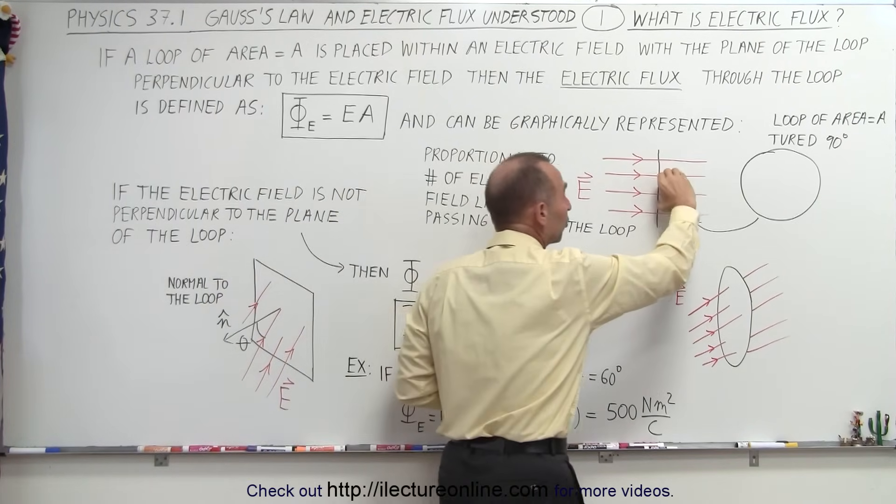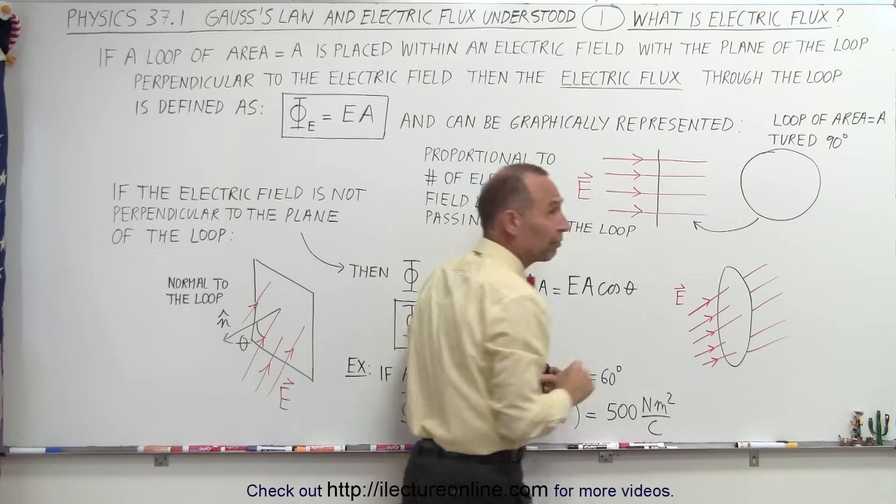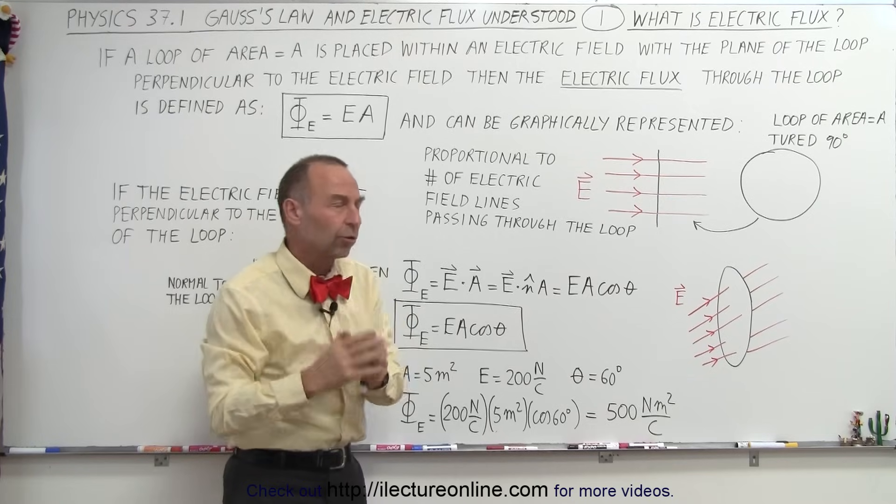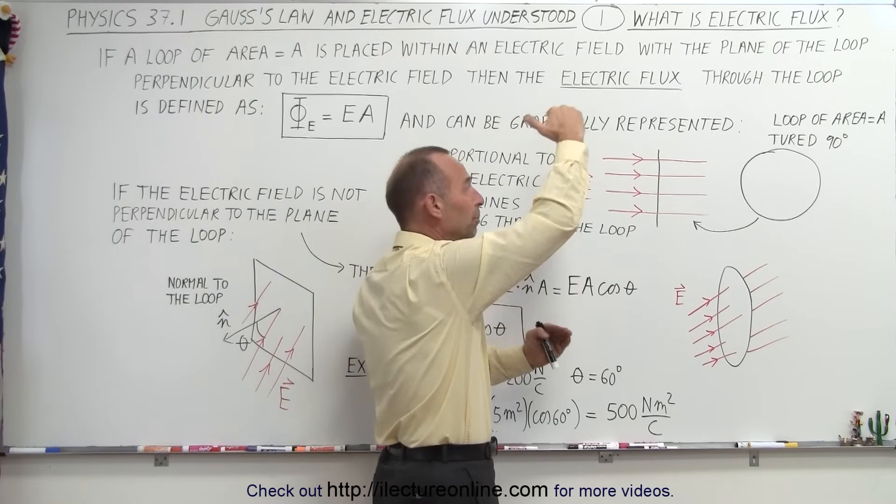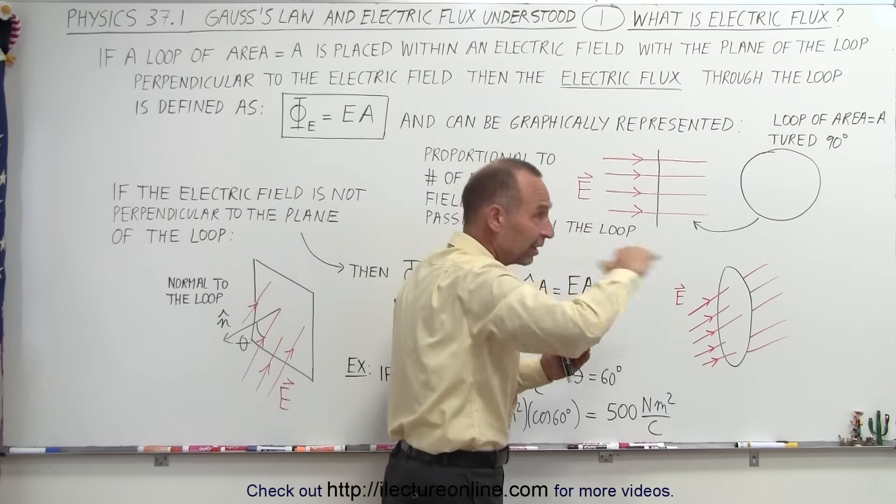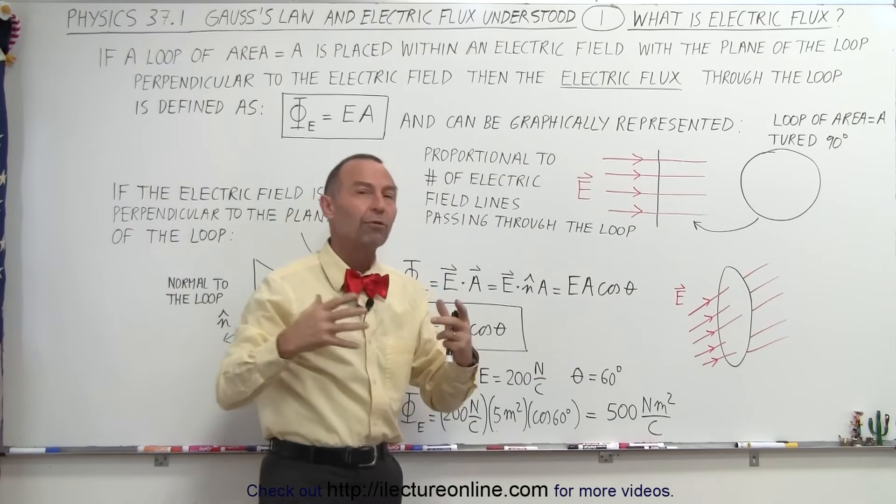Also, if you make the loop small, then not a lot of electric field lines will go through the loop, so there's not as much flux through the loop. If you make the loop bigger, then of course more electric field lines will go through the loop, and you have more flux.